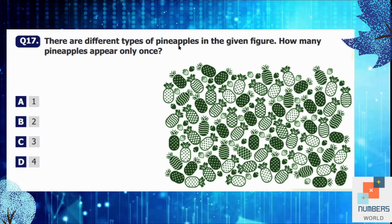Question number 17: There are different types of pineapples in the given figure. How many pineapples appear only once? The best way is that you cut all the similar looking pineapples, and when you will do that process you will find that these two pineapples are different than rest of the pineapples. Even though their pattern is quite similar like its color is same, so it's very difficult to identify it, but you have to be very careful and cut all the similar pineapples. So answer is B because there are only two different types of pineapples in there.